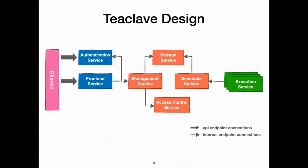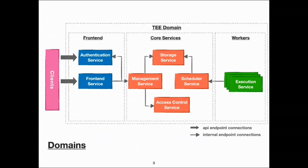You may be wondering about the internals of the Teaclave platform. Here is an overview of all services in Teaclave. You can see there are seven kinds of services connected with each other: authentication service, front-end service, management service, storage service, scheduler service, access control service, and execution service. Internally there are API endpoint connections with attested TLS connections, and the platform provides API endpoint connections to clients. Currently our services are implemented in the SGX backend.